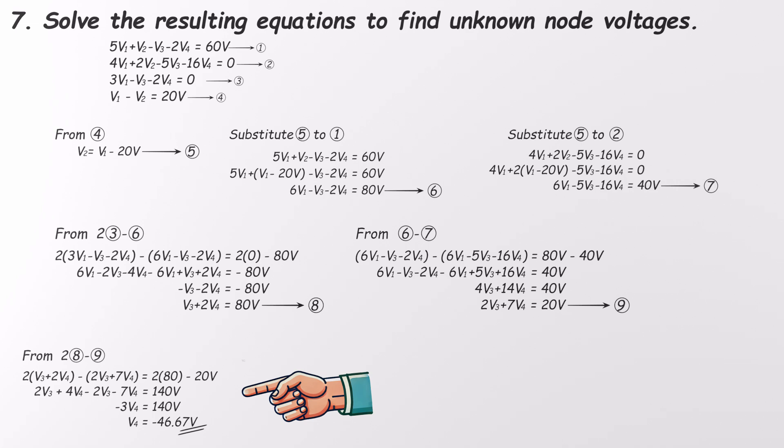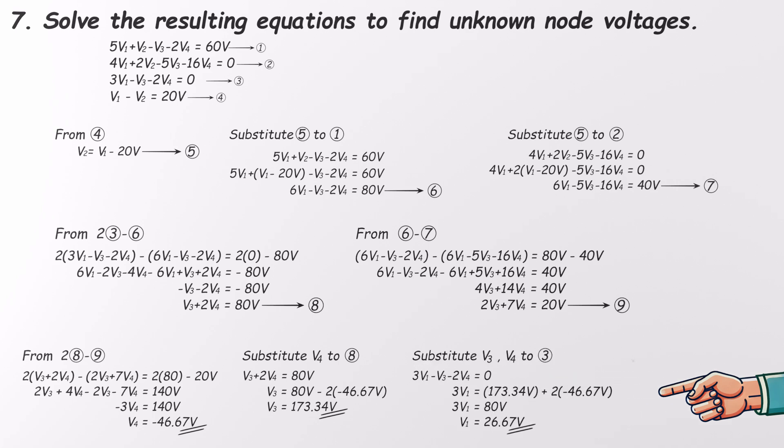From equations 8 and 9, we can now eliminate V3 and solve directly for V4. And that gives us V4 equals negative 46.67 volts. Now we back substitute step by step. Plug V4 into equation 8 to find V3. V3 equals 173.34 volts. Almost there. Substitute V3 and V4 into equation 3, and we get V1. V1 equals 26.67 volts. One last step. Plug V1 into our earlier equation for V2. V2 equals 6.67 volts. Boom! All node voltages found.